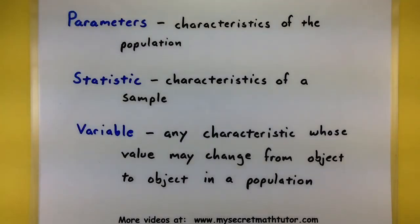Alright, last one, variables. A variable is any characteristic whose value may change from object to object in a population.